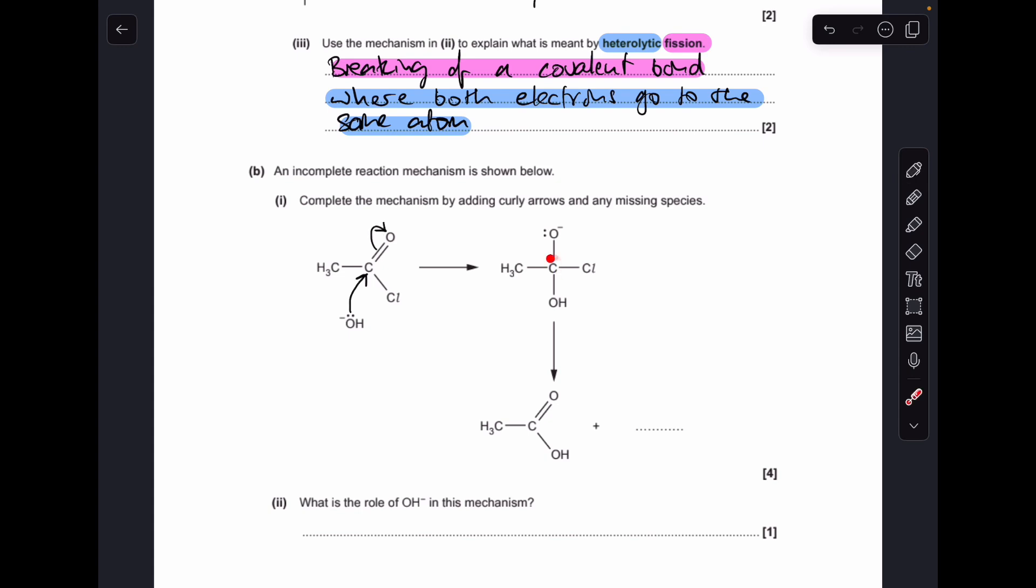So then if we look at the difference between the intermediate and the final organic product, you can see that the single bond to the O has gone back to being a double bond. And the chlorine's broken off. You can see it's not on the organic product. So in terms of curly arrows, what's happened there is this pair of electrons on the O- have gone back and reformed the double bond. So they've gone back into the middle of the bond.